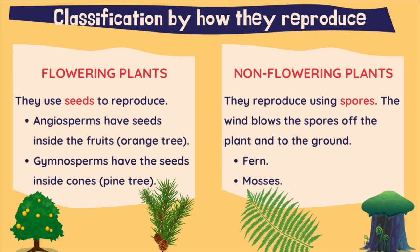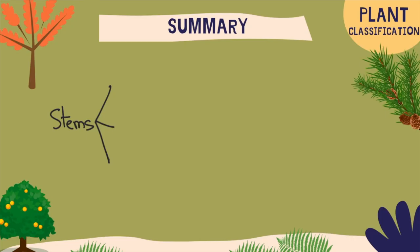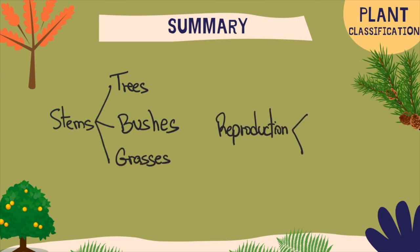We can find ferns, like this one, and mosses, like this other one. So in summary, we can classify the plants by their stems and we will find trees, bushes, and grasses. And by the way they reproduce, we have flowering plants and non-flowering plants.